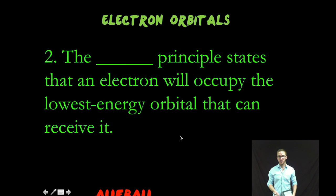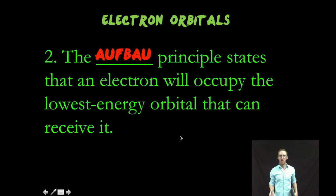Okay, second rule to keep in mind is what's known as the Aufbau principle, which states that electrons will occupy the lowest energy orbital that can receive it. I like to think electrons are just like me, lazy. And I'm going to use as little energy as possible. Electrons are the same way.